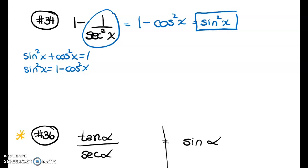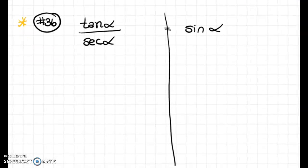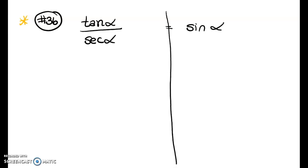This next section is all about verifying trigonometric identities. I will only ever work on one side. One key hint is to take the more complicated side and use algebraic techniques along with trig identities to reduce it to match the simpler side. I'll identify which side is more complicated first.